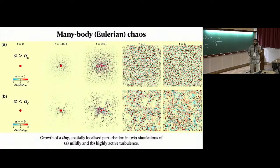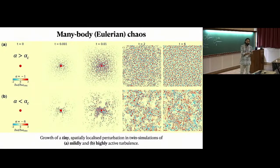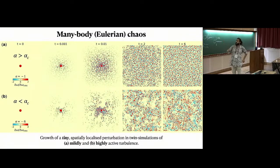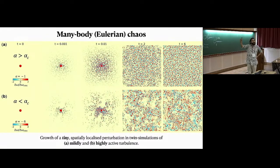Next: chaos. To measure chaos, you solve equations for a certain initial condition, perturb that initial condition, then measure how the difference between the two simulations grows — the same approach as with the Lorenz model. Here, you let simulations evolve to statistical steady state, make a copy (twin simulations), and perturb the twin. You can perturb it spectrally or locally in space. A small perturbation — just a spot — grows to the size of the complete system until it dominates. This is the butterfly effect.